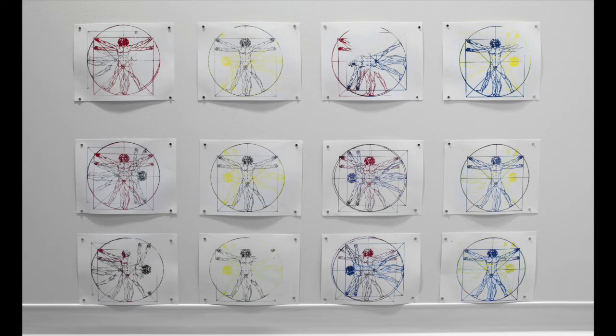This grid is arranged four across and three down, and the image on each print is of Da Vinci's Vitruvian Man drawing that has been replicated and shown throughout art history.